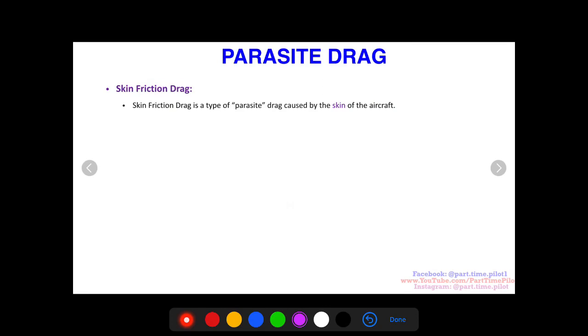The last one is skin friction drag. This is a type of parasite drag caused by the skin of an aircraft. What the heck is the skin of an aircraft? Well, to really visualize the skin of an aircraft we have to think on the microscopic level. Let's imagine we are the size of an air molecule.